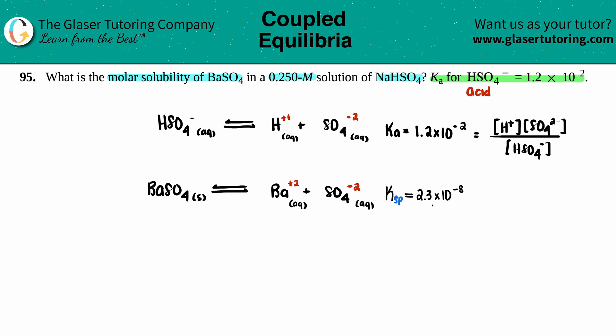Now let's do the same thing for KSP. What does this equal? Well, it's still products over reactants. But remember, no solids allowed. So this would just be the concentration of the two products. Ba 2 plus, times SO4 2 minus.